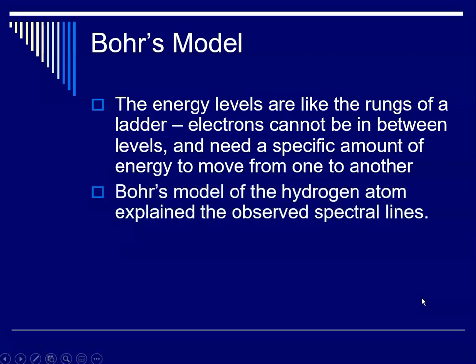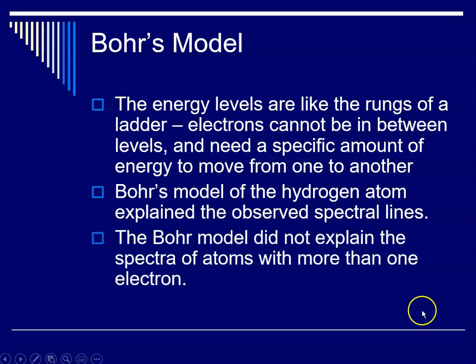And Bohr's model of the hydrogen atom explained these observed spectral lines. And it did not explain the spectra of atoms with more than one electron, but if you were just talking about hydrogen, which again only has one electron, the Bohr model explained why they saw the lines in the hydrogen spectrum.